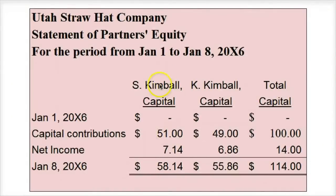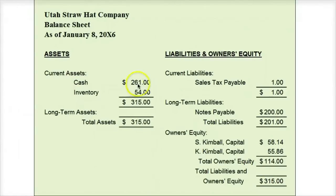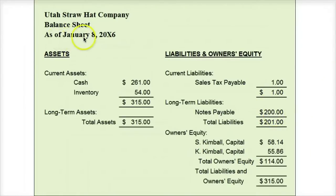On the Statement of Partners' Equity, we keep track of the two partners' equities separately. Spencer's original contribution plus 51% of the $14 in net income, and Dad gets 49% of that income — their new breakout of equity in the $114. On the balance sheet, Utah Straw Hat Company has $261 in cash and $54 of inventory in its warehouse. With a 70% margin, selling that inventory is worth far more than its shelf value, so the goal is to sell it at the same 70% margin. We still owe the state for sales taxes and the bank for notes payable. On January 31st, we prepare final financials including interest payable. Total assets equals total liabilities and owner's equity.